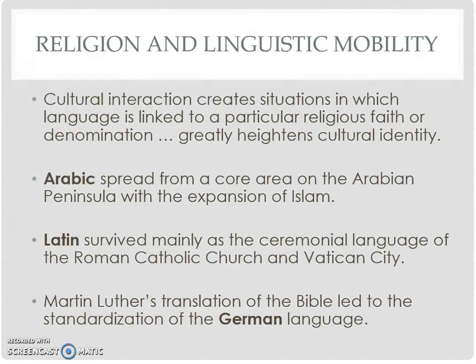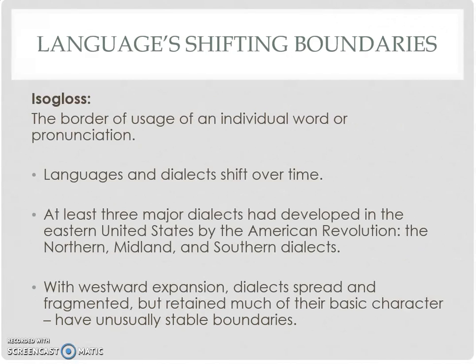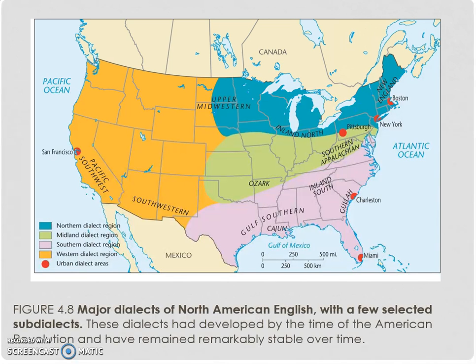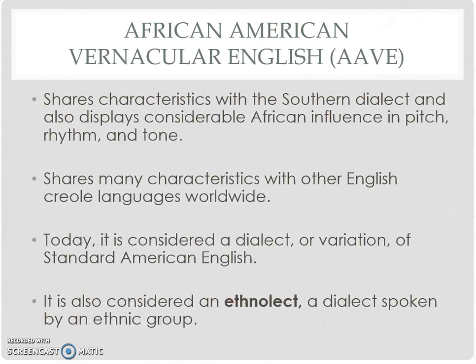You have Arabic; Latin survived largely through the Roman Catholic Church and Vatican City, though many call it a dead language. Arabic spread around the Arabian Peninsula. Isoglosses track the usage of individual words and pronunciation, and these shift over time. We see that in the United States — a perfect example is what we call soda or coke. There are all kinds of names for that, with subcultures and different dialects using different terms.